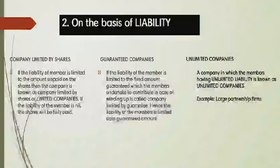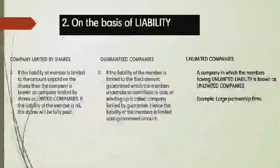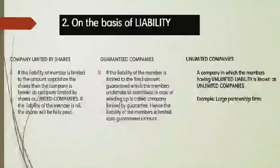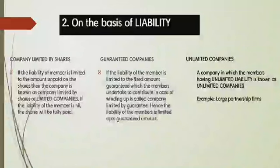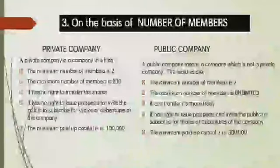The next one is unlimited company. Generally, the liability of members is limited. However, in the case of large partnership firms converting into a company, since a partnership firm has unlimited liability, when a partnership firm turns into a company, it may have unlimited liability. These are called unlimited companies.